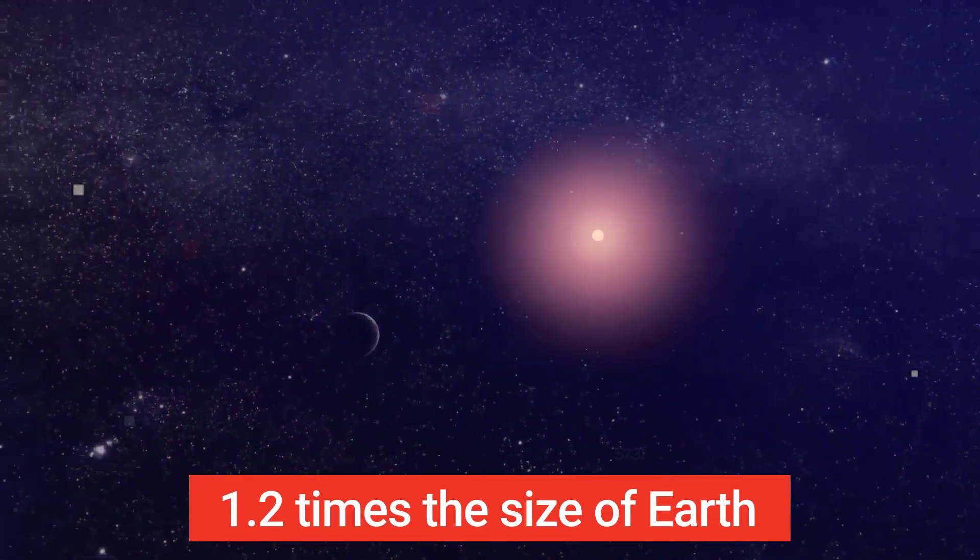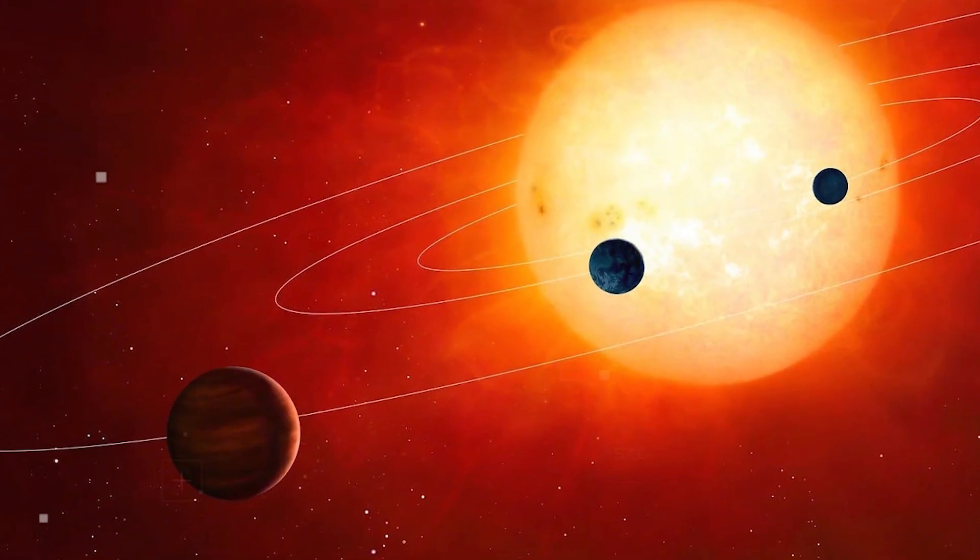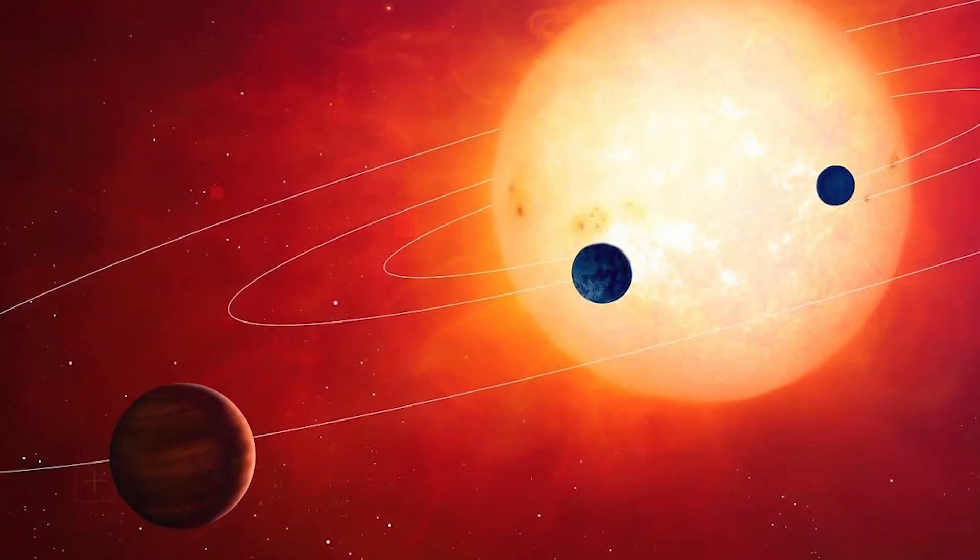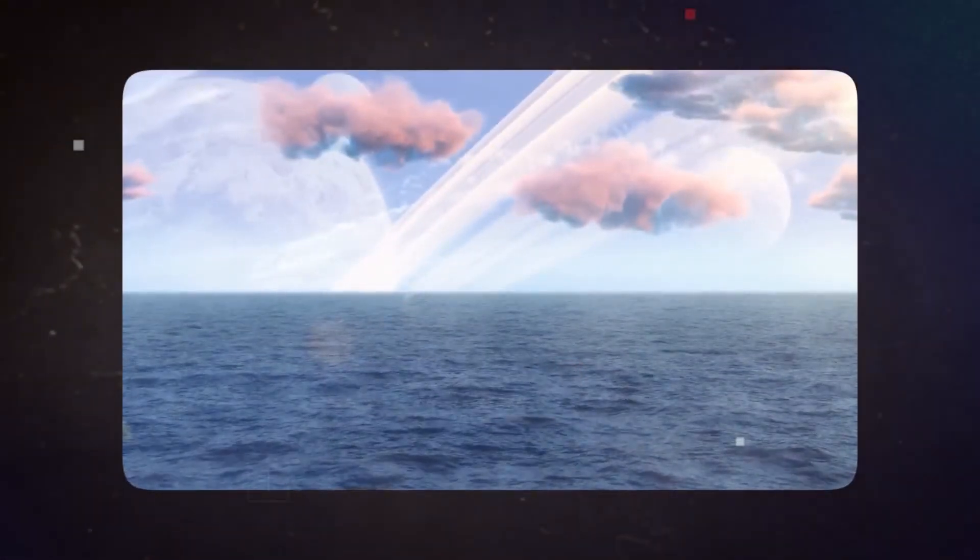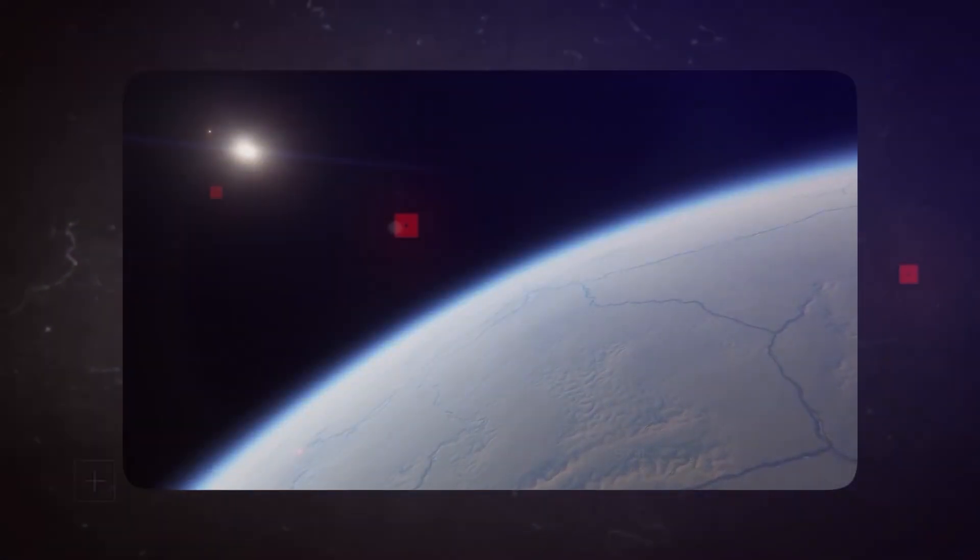Proxima b, roughly 1.2 times the size of Earth, resides in the Goldilocks zone of Proxima Centauri, where conditions might be just right for liquid water to exist on its surface, a critical factor in the search for potential habitability.